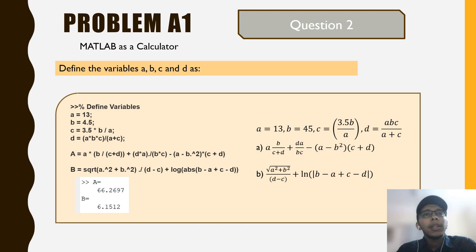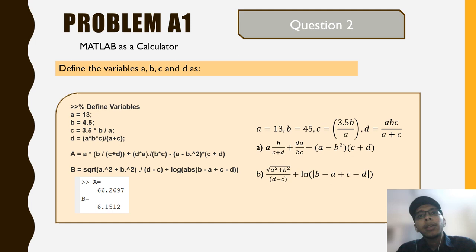We write the equation, for example: a multiplied by b, b divided by c, divided by c minus a, minus b to the power of 2 multiplied by c plus d. We do the same for equation b, then find the value of a and b as shown in the command window after running the program.